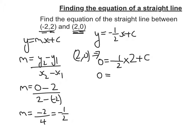So 0 is equal to negative half times 2, well, that's negative 1 plus c. So c is equal to 1. Therefore my equation is y is equal to negative half x plus 1.